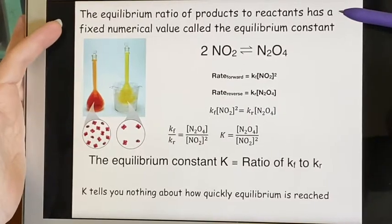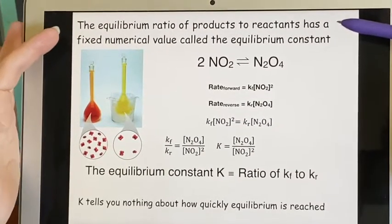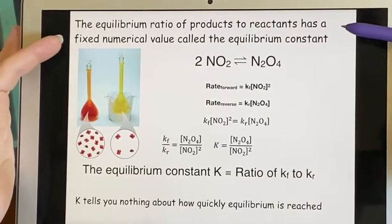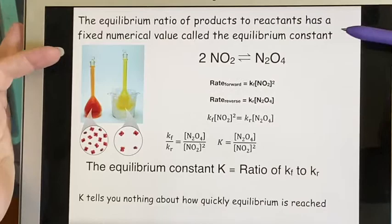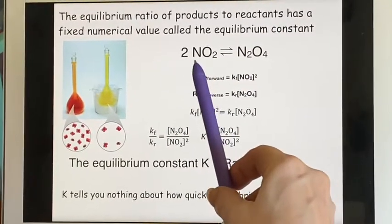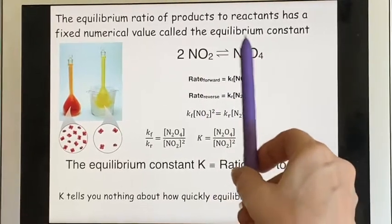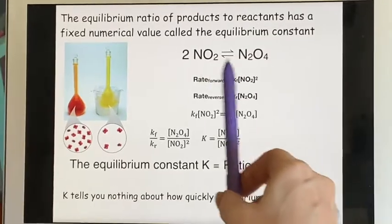It turns out that for any particular temperature, you will have a fixed equilibrium ratio, and you can call that a constant, the equilibrium constant. Here we have an example of nitrogen dioxide being turned into dinitrogen tetraoxide. It's in equilibrium.